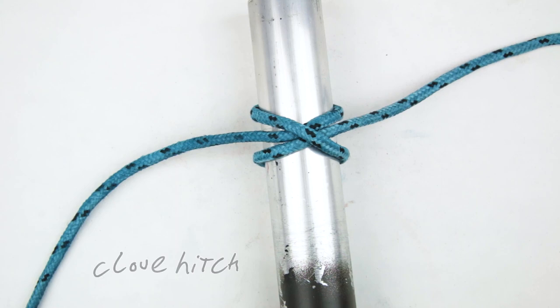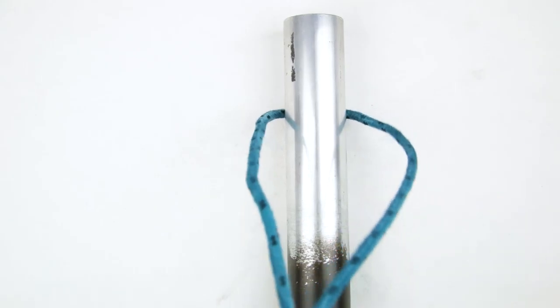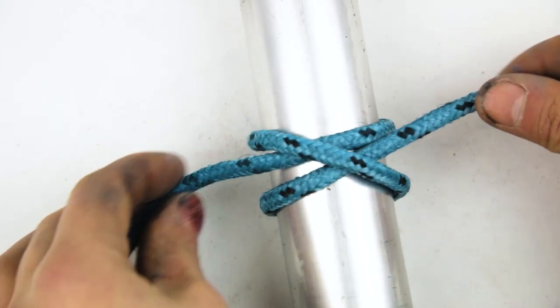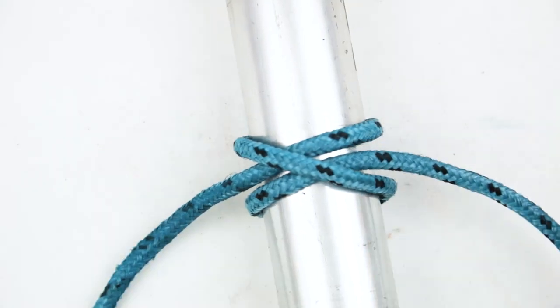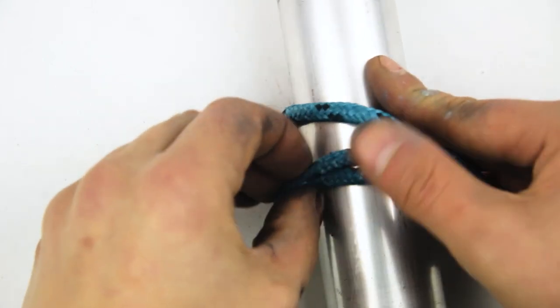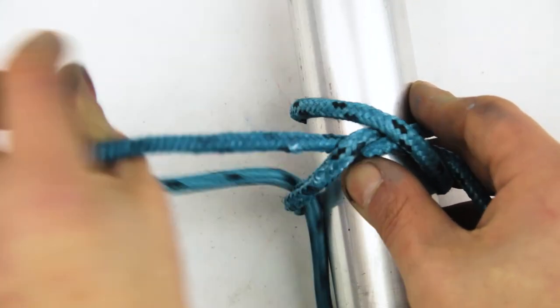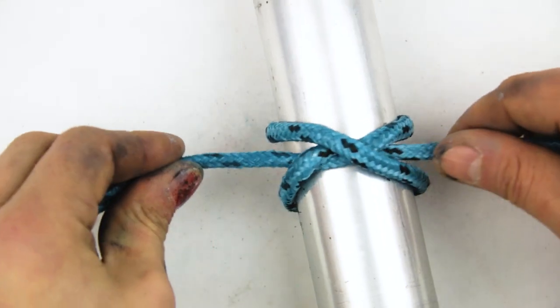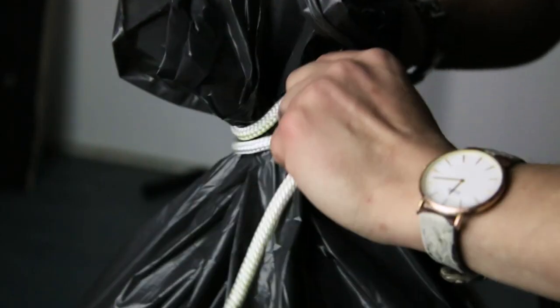First you tie a clove hitch. So one, under, over, and then under the bridge. It should look like this. Then you go over the other one, and underneath. This is called a constrictor knot. You tighten once, and it'll hold on.